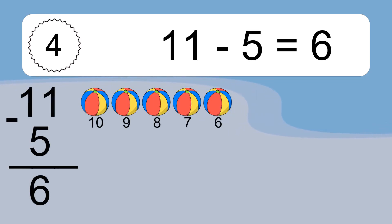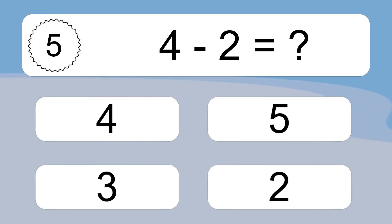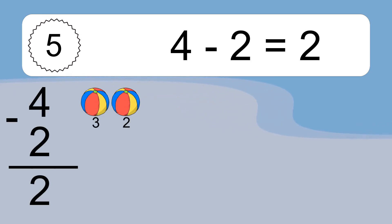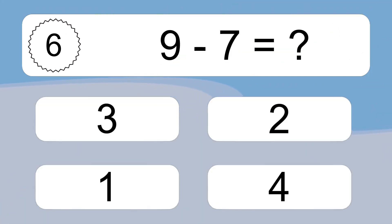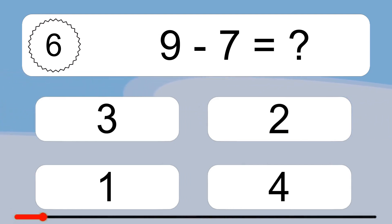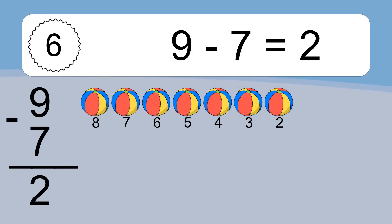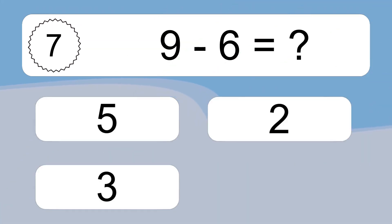11 minus 5 equals 6. Let's count it: 10, 9, 8, 7, 6. 4 minus 2 equals what? 9 minus 7 equals 2. Let's count it: 8, 7, 6, 5, 4, 3, 2. 9 minus 6 equals what?